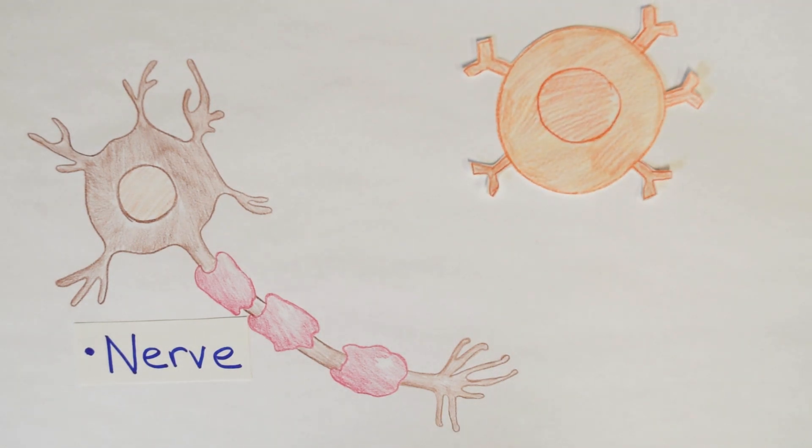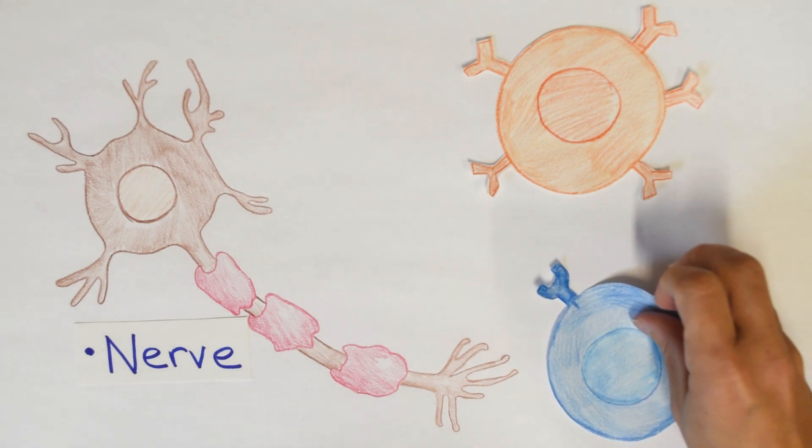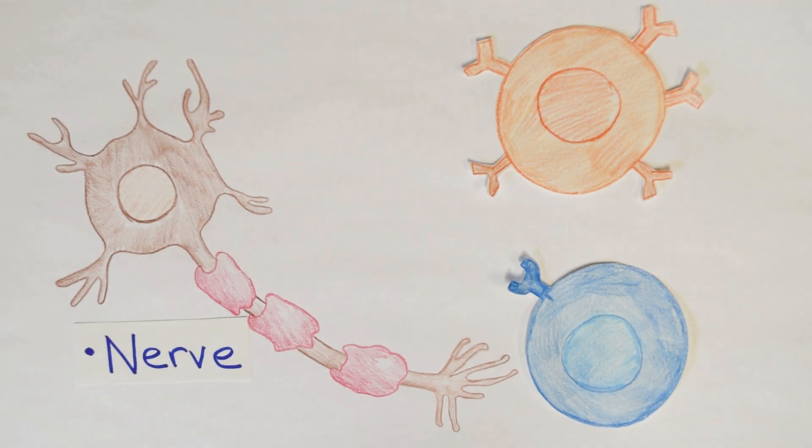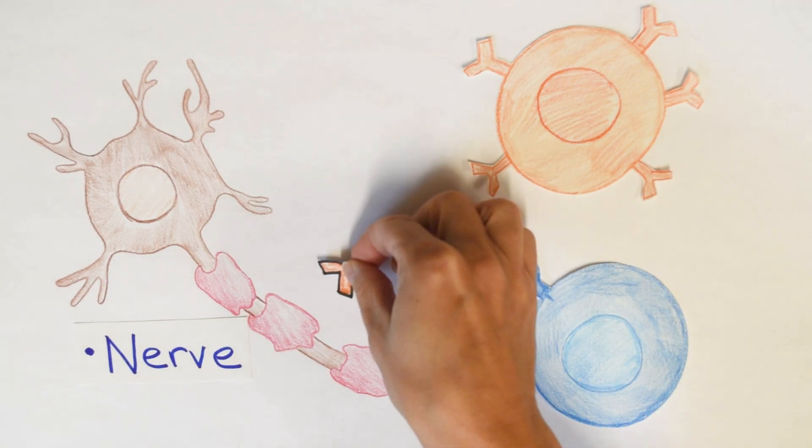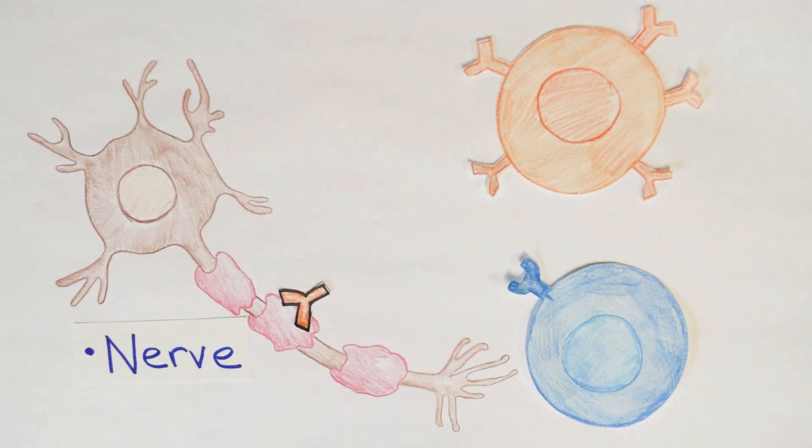Here we have B cells, which have been activated, and we're going to have T cells, which have been activated too. So they're going to attack the nerve. They're going to specifically attack the myelin made by the Schwann cells here that I drew in pink on the brown nerve. So why are there antibodies going there?